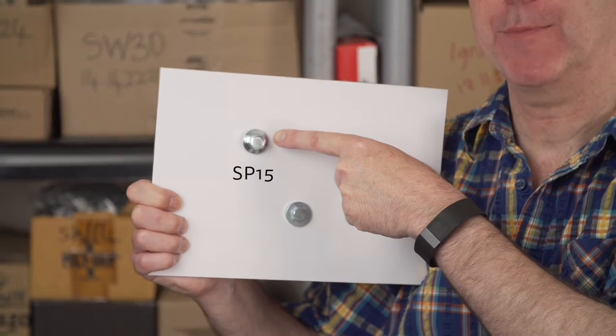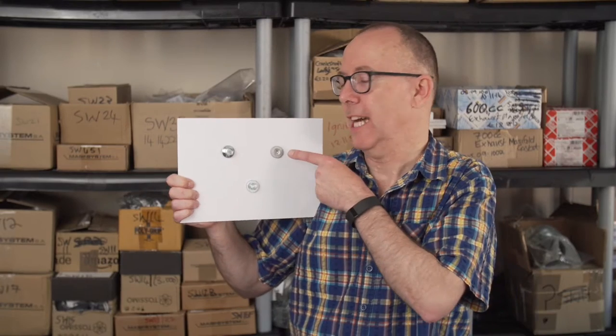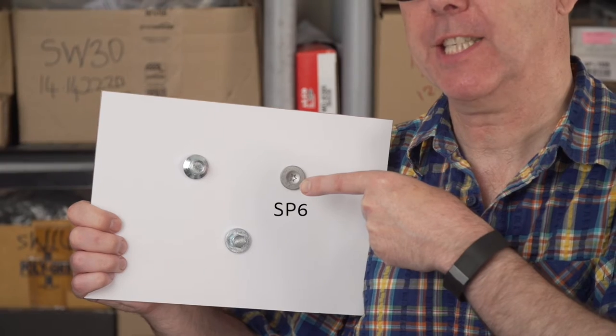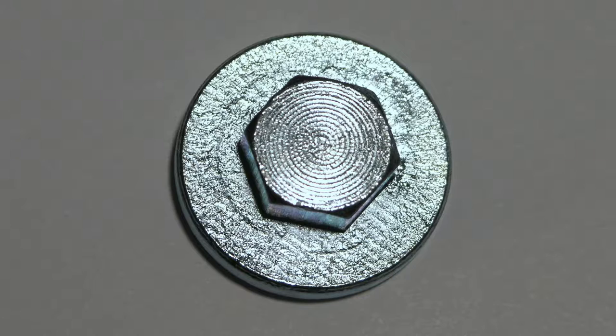Does it have a 25 mil round head on it with a 45 torques inside? Then it's an SP6. Does it have a 26 mil round head on it with a 30 mil hex head on it? Then it's an SP14.